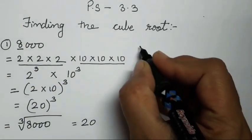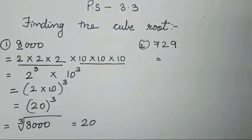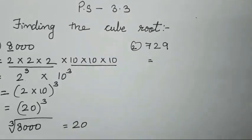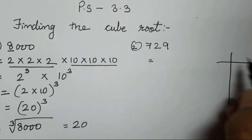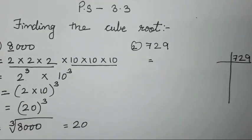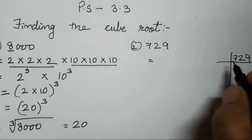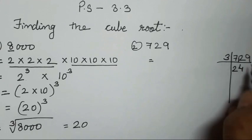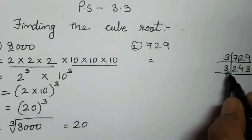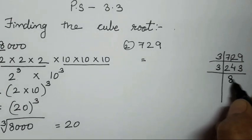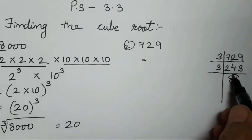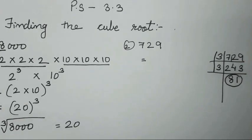The second question is 729. I am going to show you the easiest way to find the cube root. We can factorize 729. We will use the table of 3: 3 times 243, and 243 we divide by 3 again — 3 threes are 9, so we get 81. We factorize further using 3.